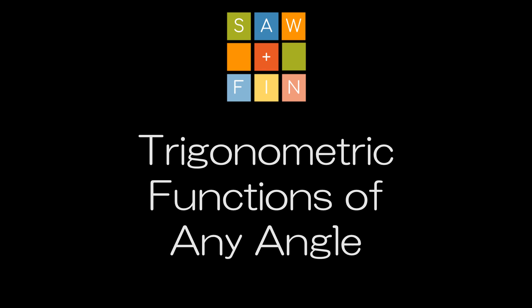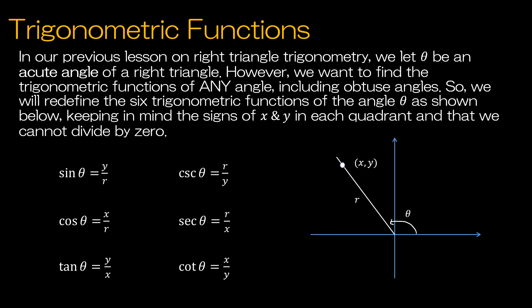Trigonometric functions of any angle. Up to this point, we have learned about the unit circle and also about right triangle trigonometry. However, in our last lesson over right triangle trigonometry, theta always had to be an acute angle of a right triangle. But we want to be able to apply this to any angle, including obtuse angles. So let's take a look at how we can do that.